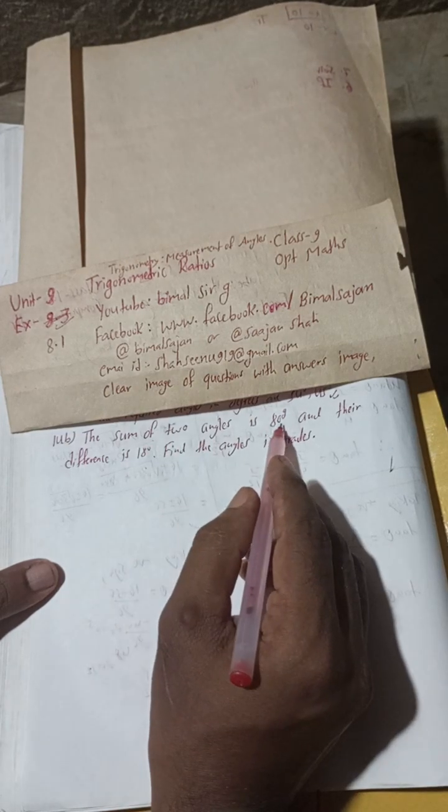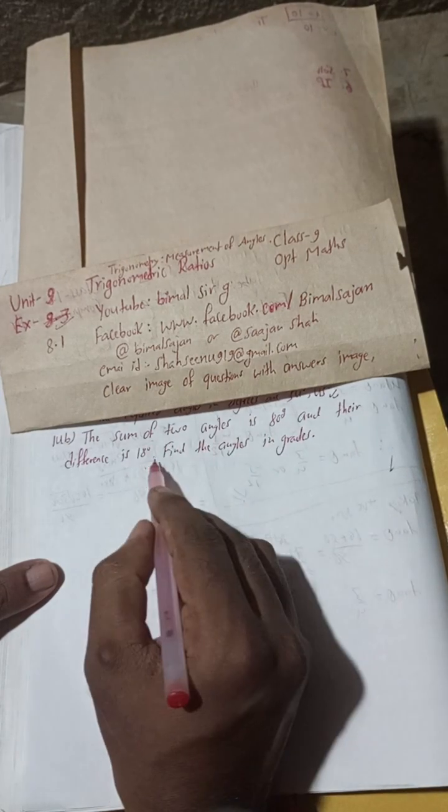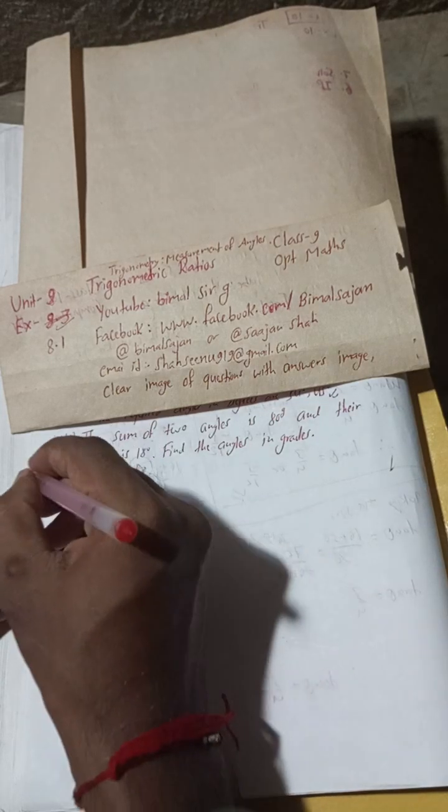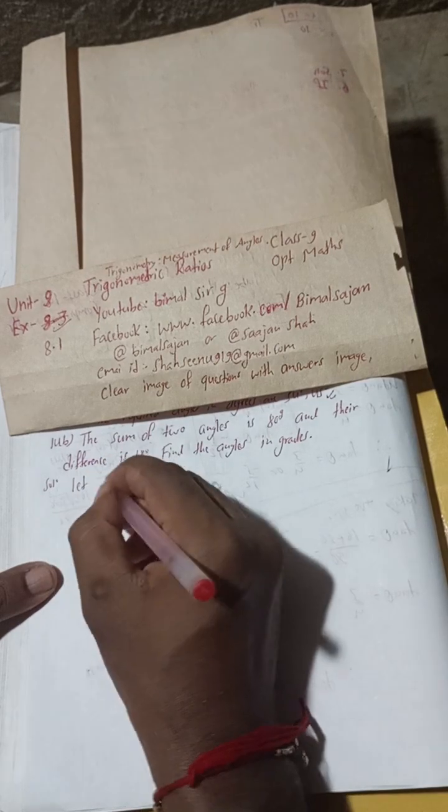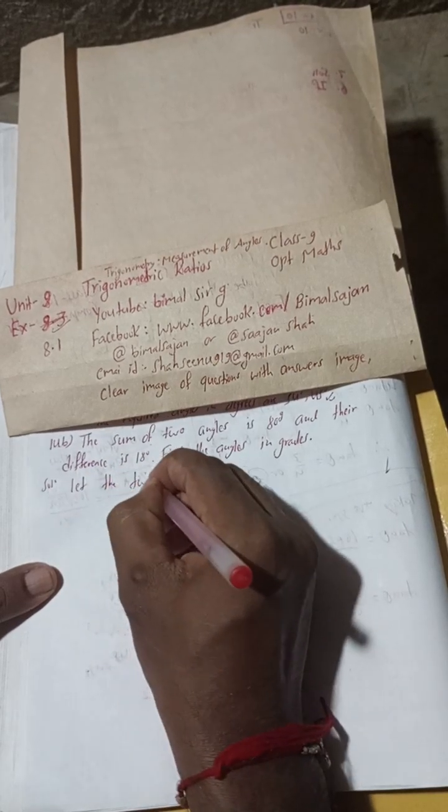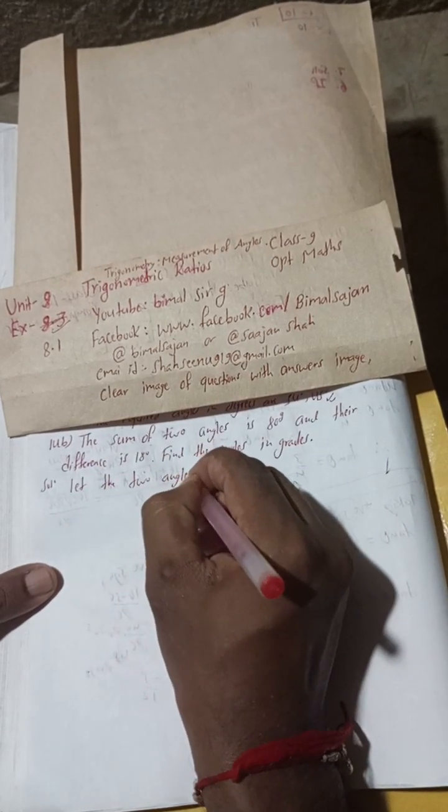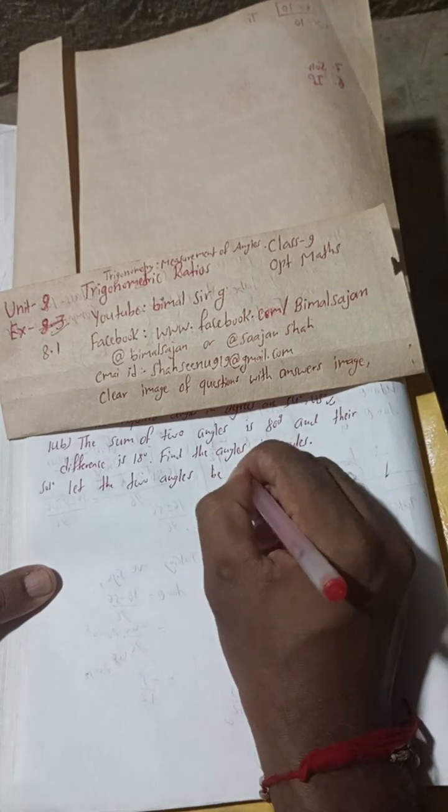The sum of two angles is 80 grade and their difference is 18 degree. Find the angles in grades. Solution: Let the two angles be x and y.